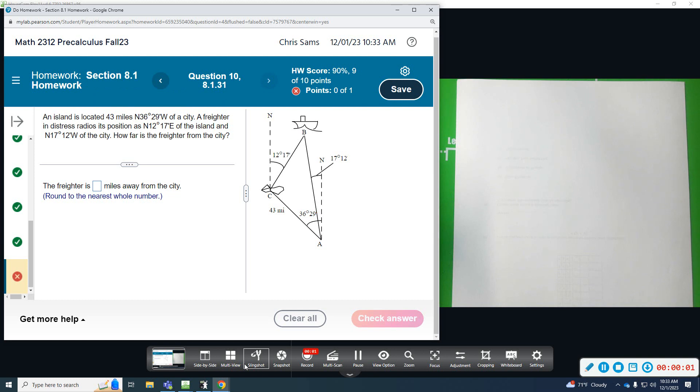Alright, question number 10, word problem. An island is located 43 miles north 36 degrees and 29 minutes west of a city. A freighter in distress radios its position as north 12 degrees 17 minutes east of an island and north 17 degrees 12 minutes west of the city. How far is the freighter from the city?